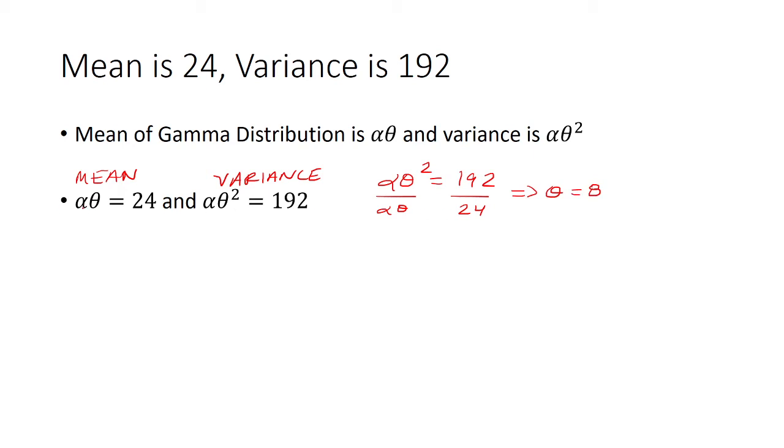And then from there, you can plug it into the mean here. You get 8 alpha equals 24, so then alpha is 3.